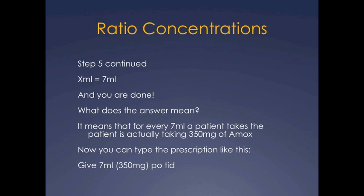What does the answer mean? It means that for every 7ml a patient takes, the patient is actually taking 350 milligrams of Amoxicillin. Now you can type the prescription like this: Give 7ml and in parentheses 350 milligrams PO TID.